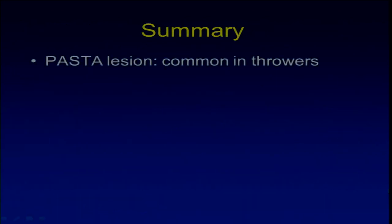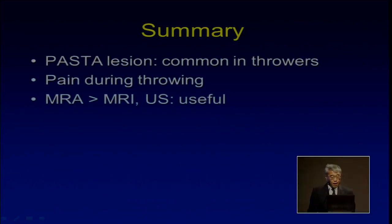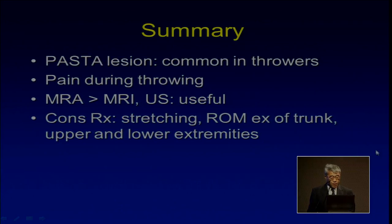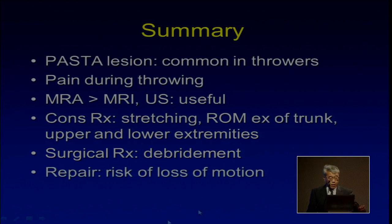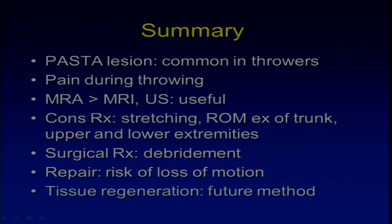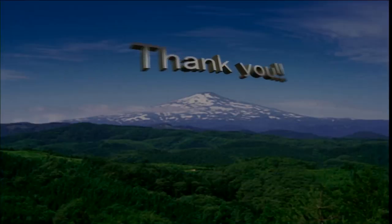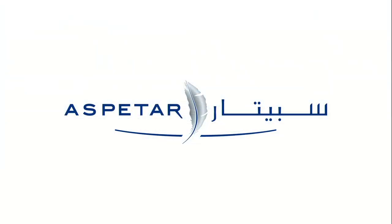In summary: PASTA lesion is a common lesion in throwers presenting with pain during throwing motion. MR arthrography is better than plain MRI or ultrasound, but both are useful. Conservative treatment including stretching and range of motion — especially for the trunk and extremities — should be the first approach. Surgical debridement may be safe as it avoids shoulder stiffness, but repair carries a risk of loss of motion. Therefore, tissue regeneration may be the future direction. Thank you for your attention.